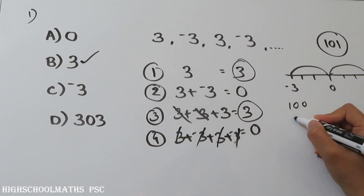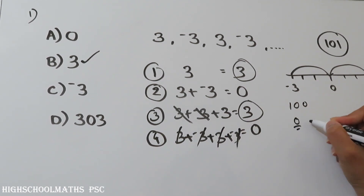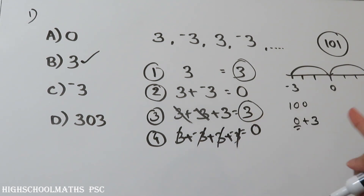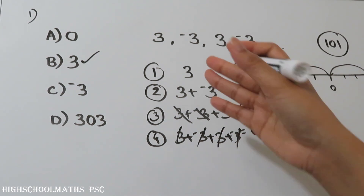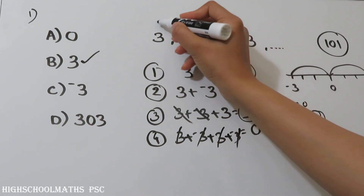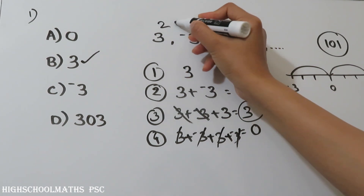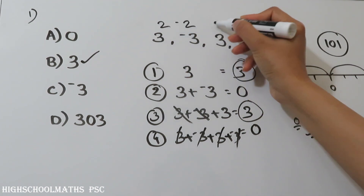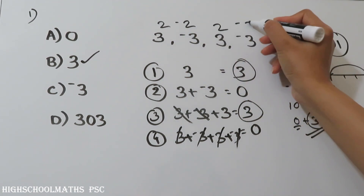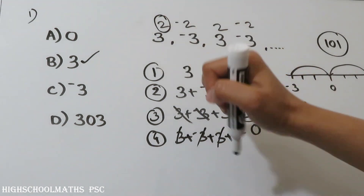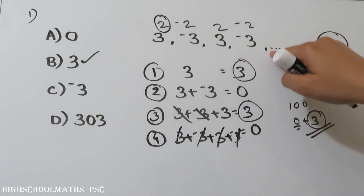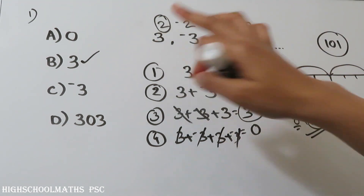So if the answer is plus 3, you will get the answer as 3. The answer for the 1st term pattern with 101 terms is 3. Option B is the answer.